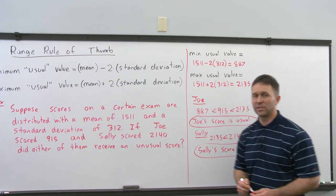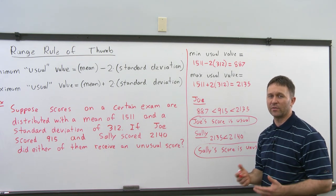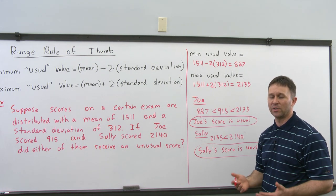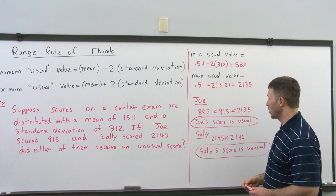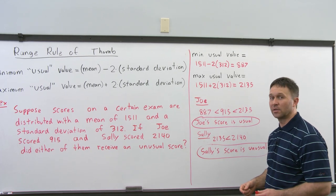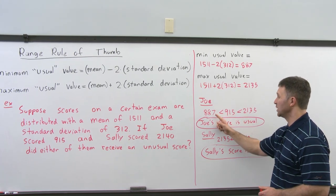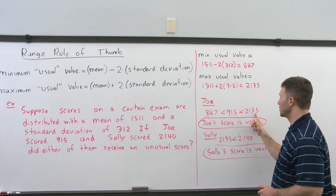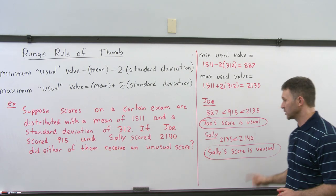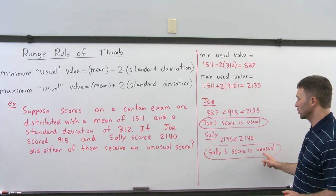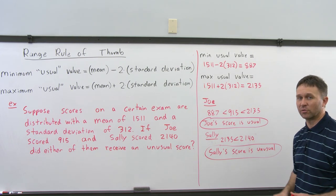In this example we had two scores and were determining if either of them was unusual. Joe's score was not unusual because it was between the min usual and the max usual. Sally's score was unusual because it was bigger than the max usual value.